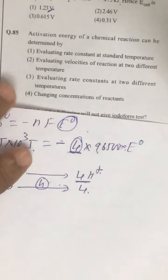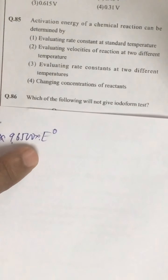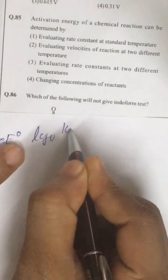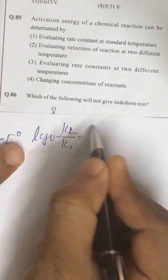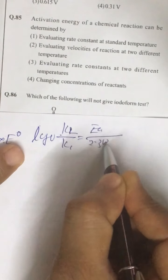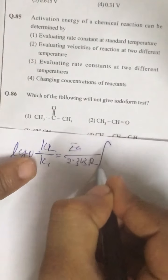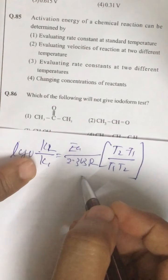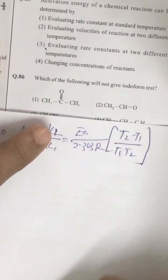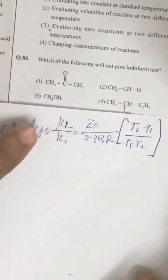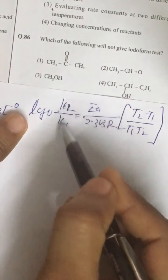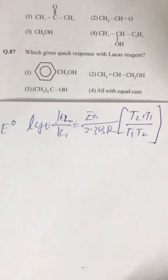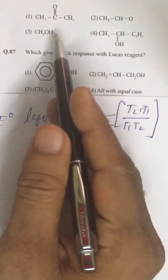Question number 85: activation energy of a chemical reaction can be determined by the relation log(k₂/k₁) = Eₐ / (2.303R) × (T₂ − T₁)/(T₁T₂). The correct answer is the third option — evaluating the rate constant at two different temperatures. If you know k₁, k₂, T₁, and T₂, you can find the energy of activation since R is constant.